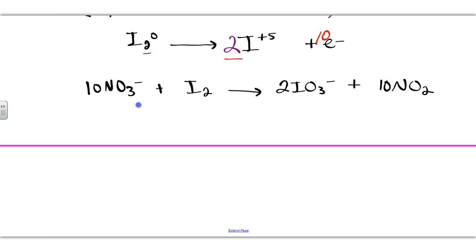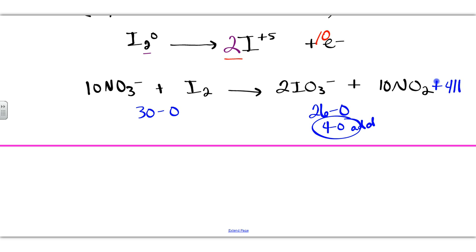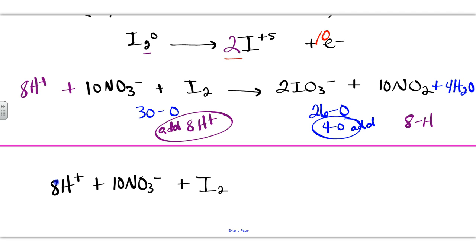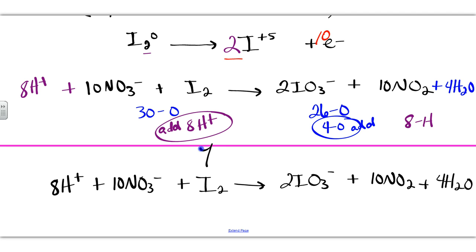On the left-hand side I have 30 oxygens. On the right-hand side we have 10 times 2 is 20, plus 2 times 3 is 6, so 26 oxygens. Which means we need 4 more oxygens on the right-hand side, so we're going to add 4 waters. Checking our hydrogens: we have 4 times 2 is 8 hydrogens on the right, so we need to add 8 H⁺ on the left.